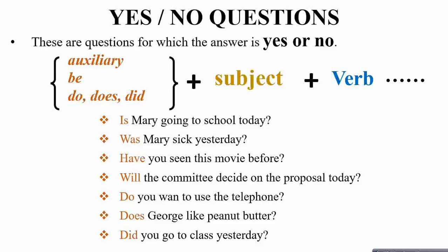The first type of question is yes or no questions — questions that we answer with yes or no. The structure starts with an auxiliary, BE, or DO/DOES/DID, followed by the subject, followed by the verb. Let's look at some examples.